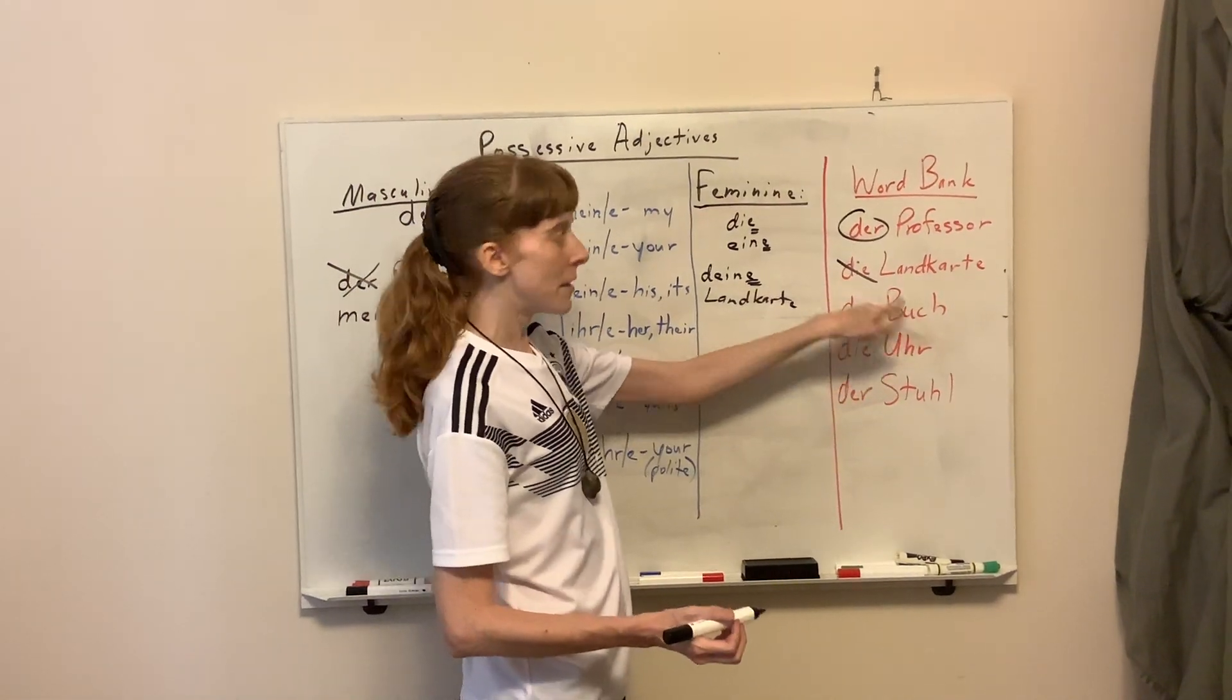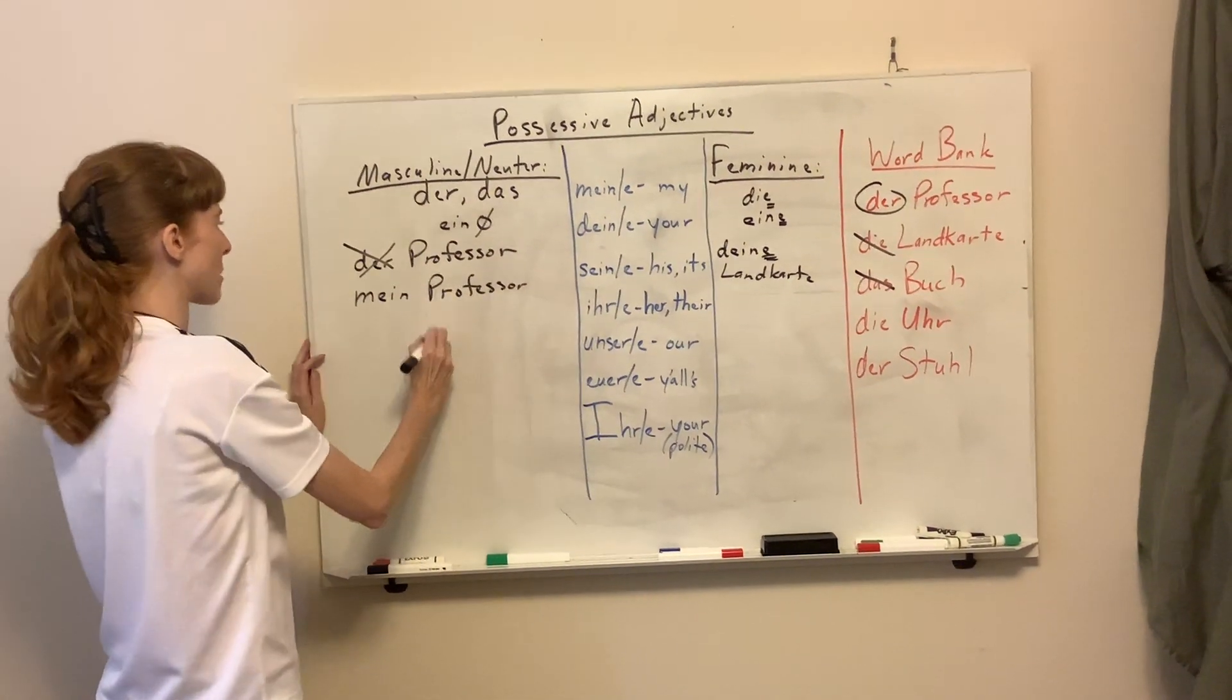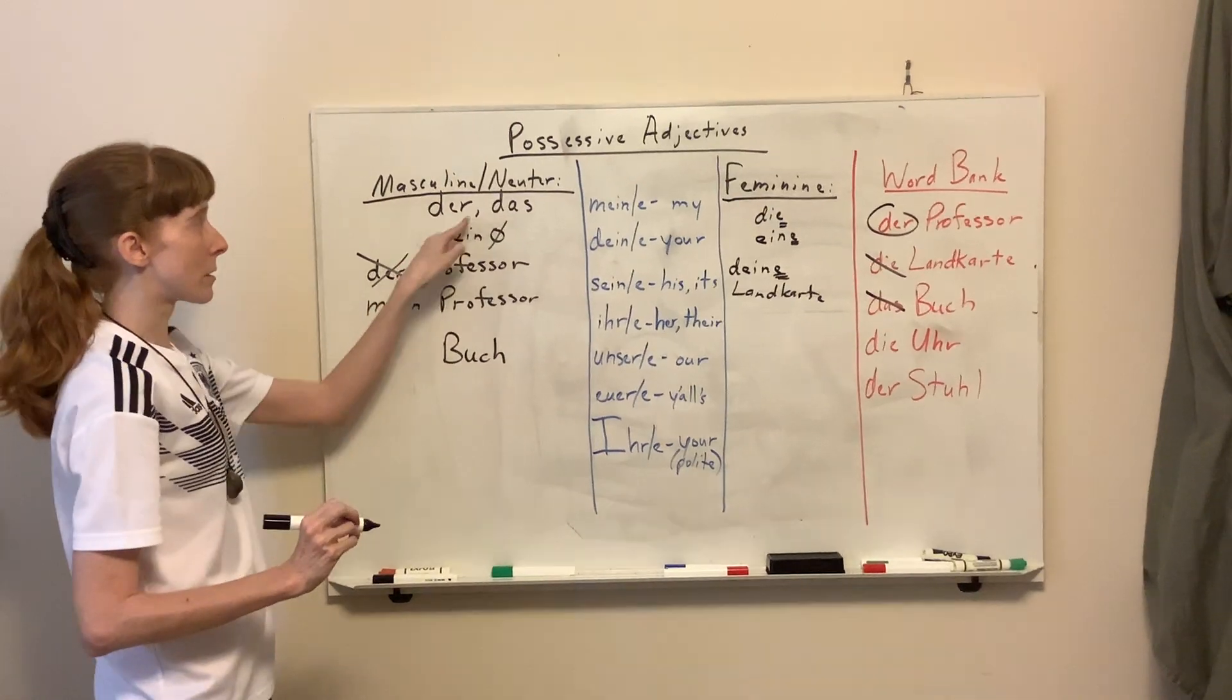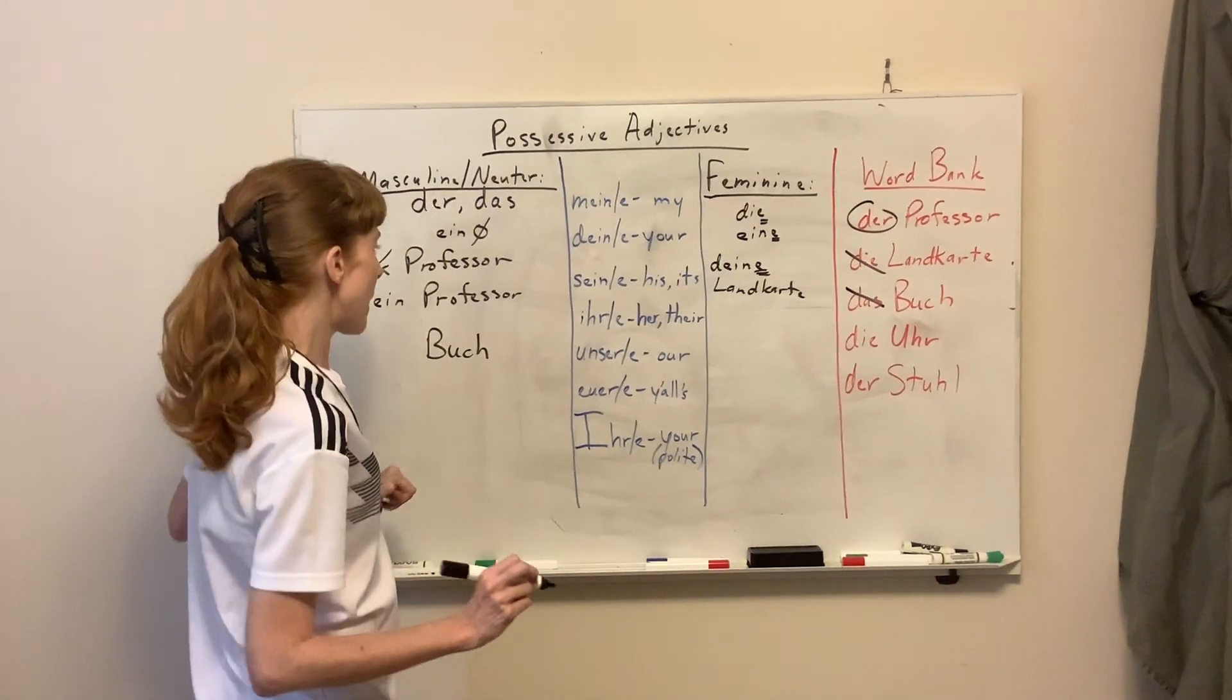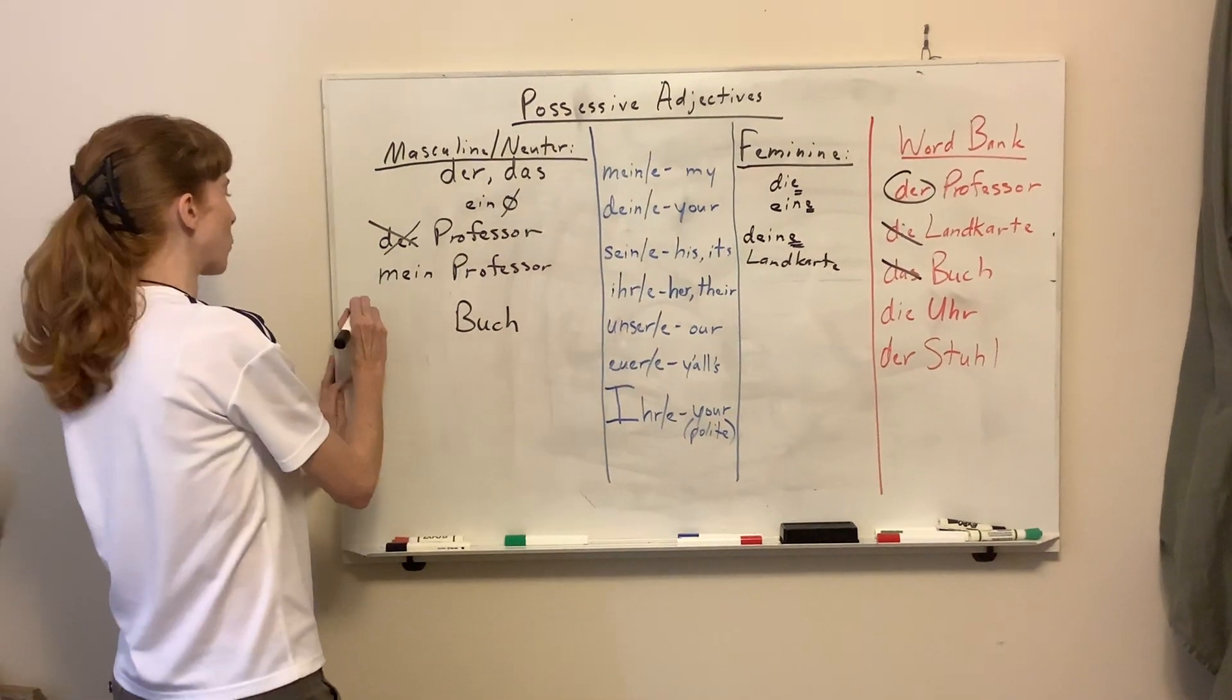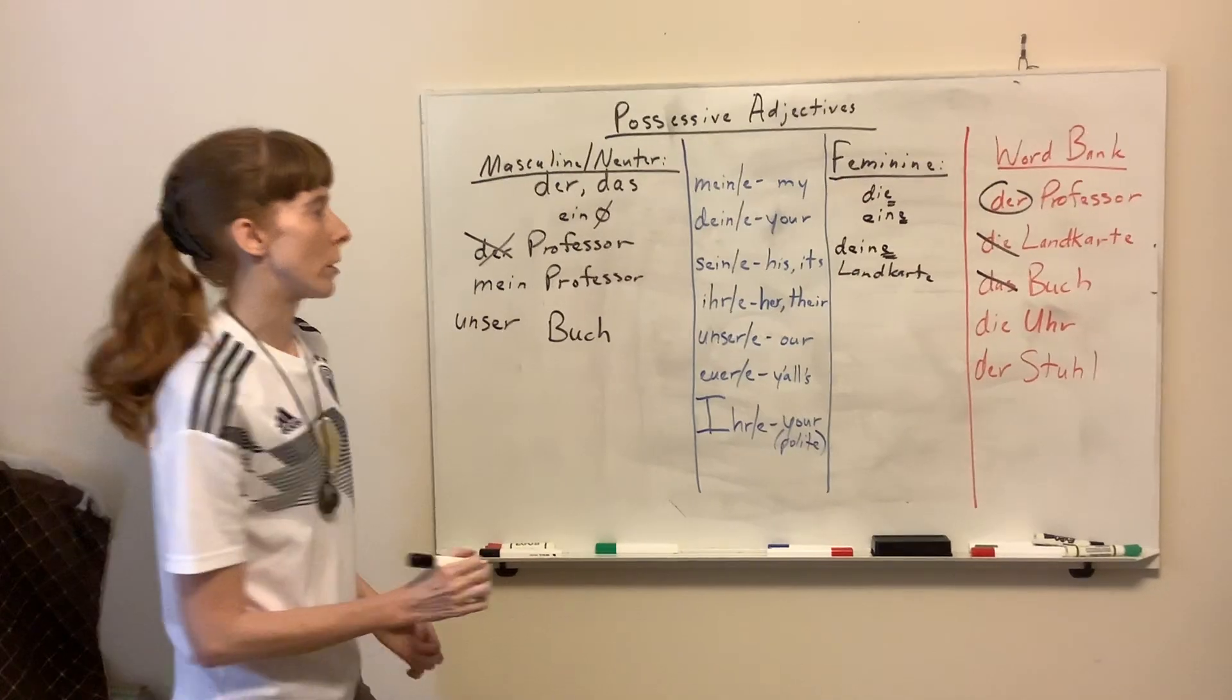Okay, the next one is das Buch. Das is neuter. We're going to take off that das. Move it over here to the masculine neuter column. We don't need an ending because it's der oder das. And let's make this one our book. Unser. Unser Buch. Das ist unser Buch. That's our book.